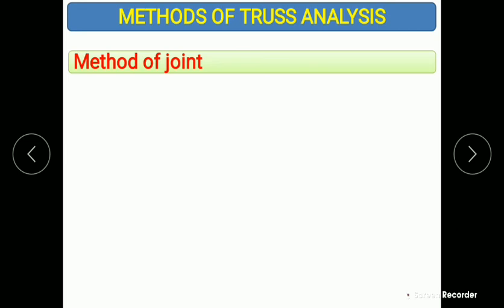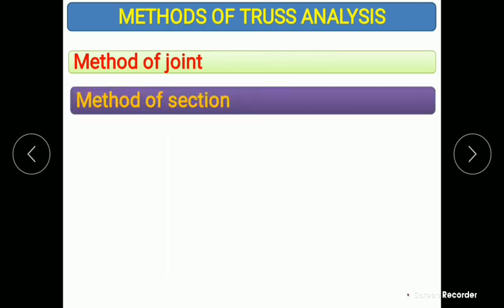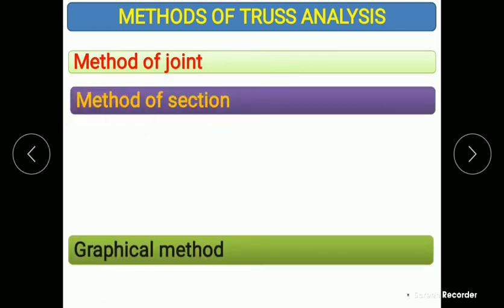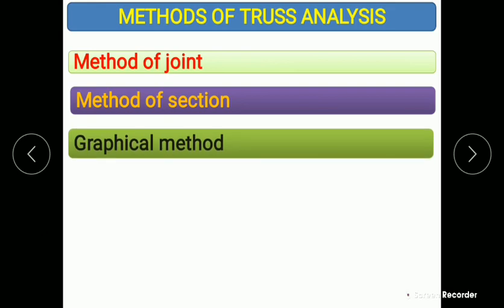There are different methods for truss analysis: the first is the method of joints, the second is the method of sections, and the third is the graphical method. In this unit, we will discuss only the first two — method of joints and method of sections.